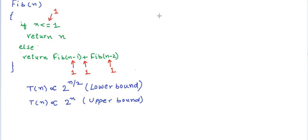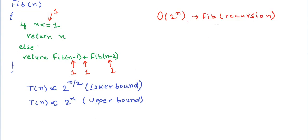In complexity analysis, we often use the closest upper bound to make sense of the runtime in the worst case. Big O notation, which is one of the most famous notations to describe time complexity, represents the upper bound of the growth of the function. So we can say that this particular algorithm has a time complexity of O(2^n). Fib recursion — the recursive implementation of Fibonacci sequence — has complexity O(2^n), whereas an iterative implementation using loops would have complexity O(n).